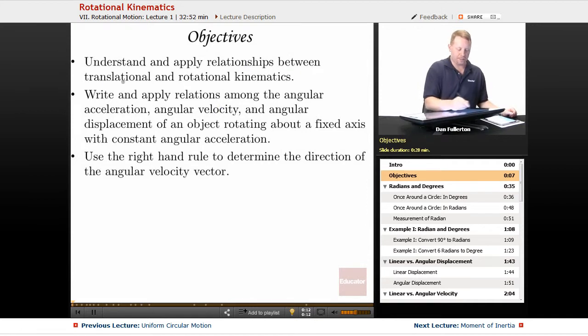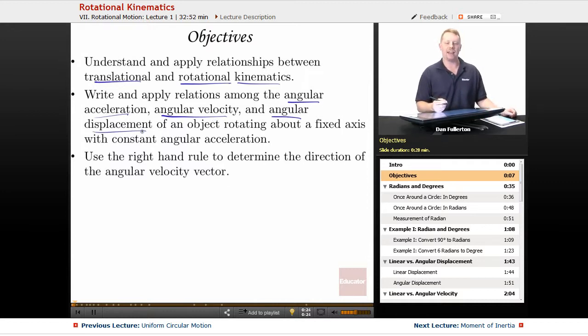Understand and apply relationships between translational and rotational kinematics. Write and apply relations among the angular acceleration, angular velocity, and angular displacement of an object rotating about a fixed axis with constant angular acceleration. And use the right-hand rule to determine the direction of the angular velocity vector.